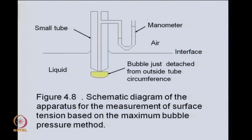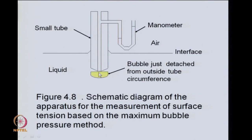This is an exaggerated figure of the apparatus. You take a small tube like a capillary, immerse it in a liquid, and have a provision to measure the pressure inside the tube or inside the bubble which forms at the tip. You introduce gas or air through the capillary and form a bubble inside the liquid. Think about how the bubble would form at the tip of this capillary — whether the liquid wets the solid or not would influence how the bubble grows at the tip before eventually detaching.